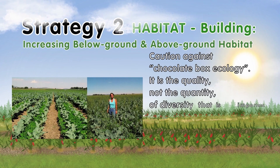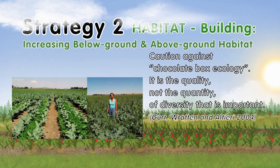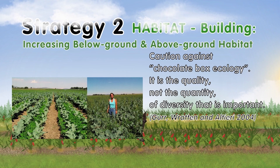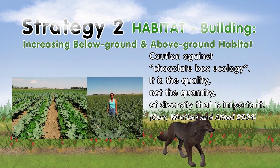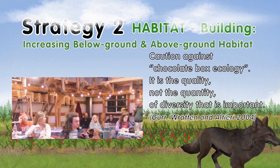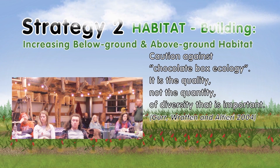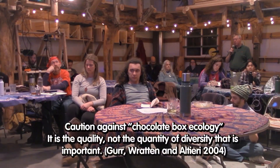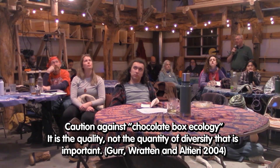Ecologists caution against — and I love this term — a 'chocolate box ecology strategy.' Gur Ratten and my hero Miguel Altieri say it is the quality, not the quantity, of diversity that is important. In ecology, the resilience and the ability to self-regulate of an ecosystem is highly related to the network of beneficial interrelationships between the elements. That network of interrelationships is actually more important than any individual element.